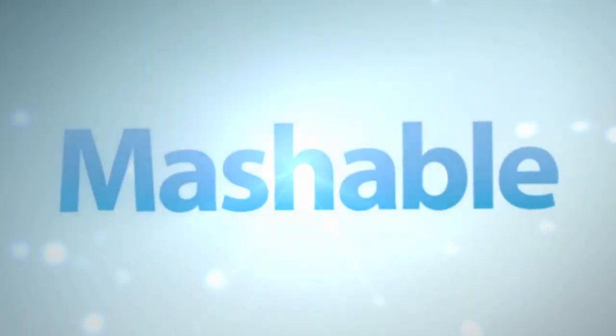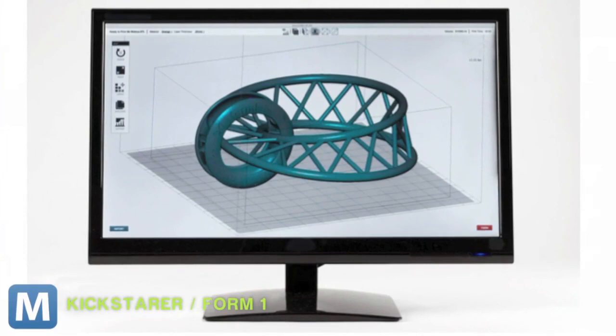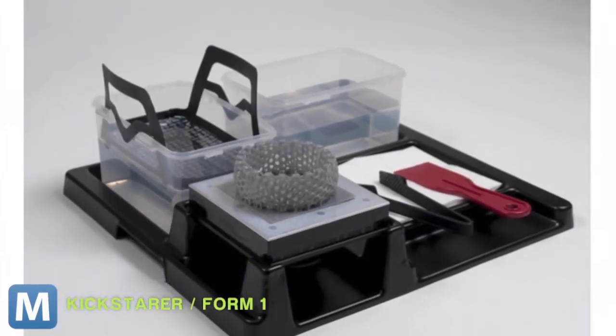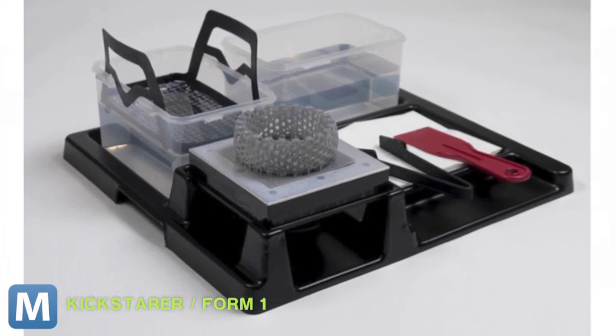Layers can get down to 25 microns. This will give you cleaner, better-looking models. The Form 1 will ship with printing software that plays nicely with 3D CAD programs. It also comes with a post-processing kit that rinses any excess resin off your models when they're printed.